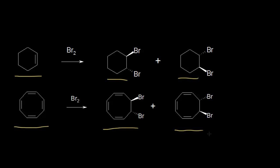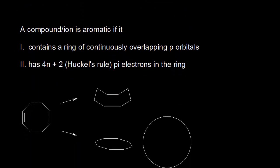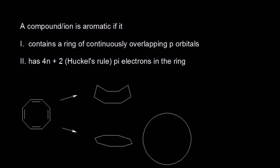It turns out cyclooctatetraene isn't even conjugated. So it looks like it has alternating single and double bonds in this dot structure, but it behaves like isolated double bonds — like four different isolated double bonds. And it's not aromatic. So let's review the criteria to determine if a compound is aromatic: a compound or ion is aromatic if it contains a ring of continuously overlapping p orbitals and also has 4n+2 pi electrons in the ring, where n is an integer — which is Hückel's rule.